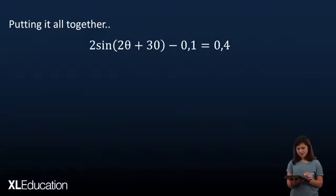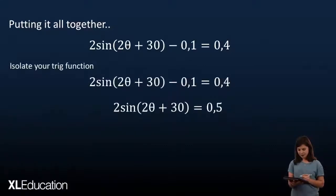So, let's put this together in the kind of question that you might see in a test. So, here we have two sine of something in the bracket minus 0.1 equals 0.4. Great. So, what we want to do at first is to get all of our whole numbers, all of our constants on one side and isolate our trig functions.